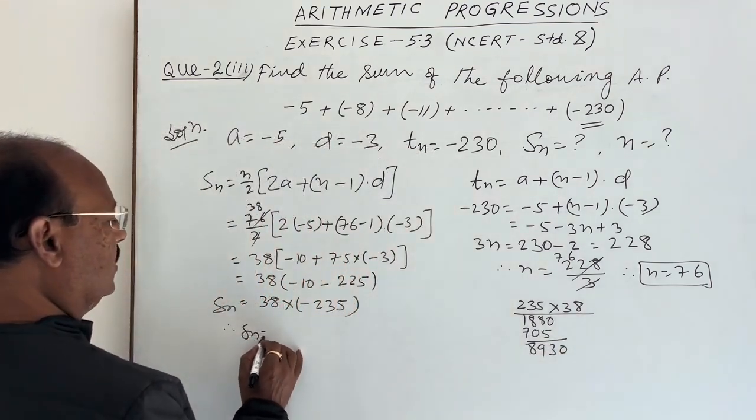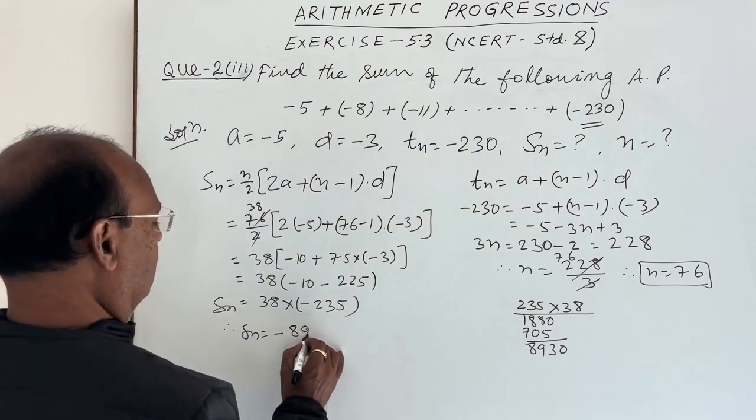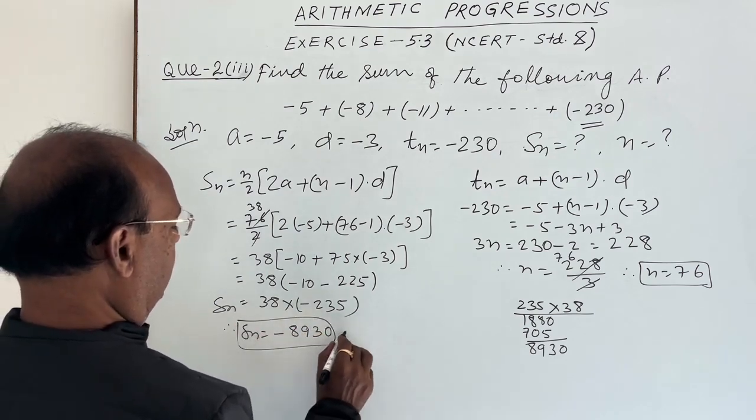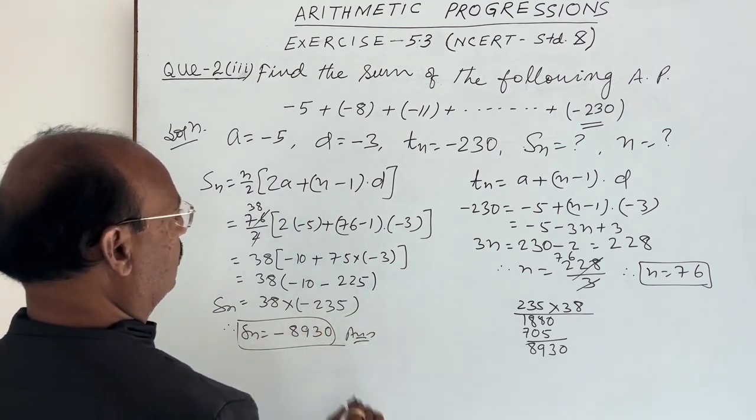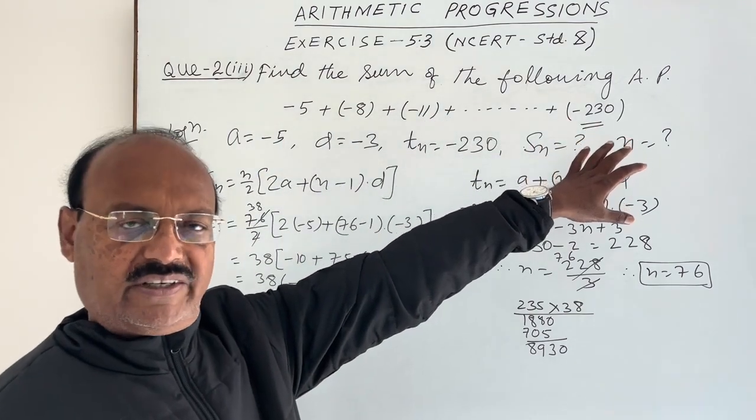Therefore Sn is, this is negative sign, minus 8930. This is the required answer. This is the value of sum of this arithmetic progression. Very simple, understood. Question is very important.